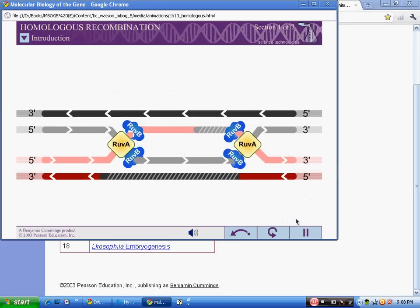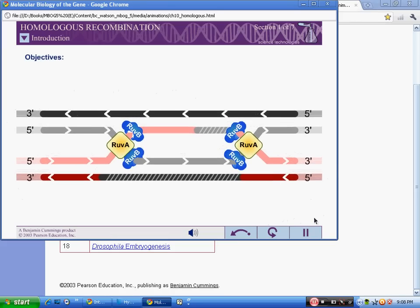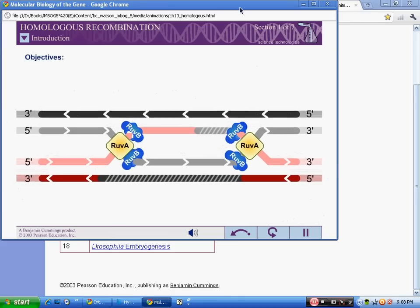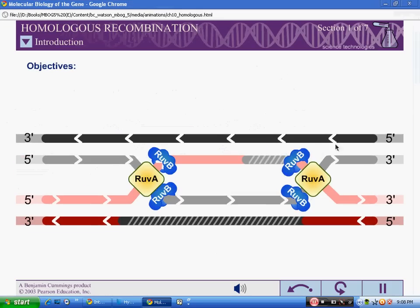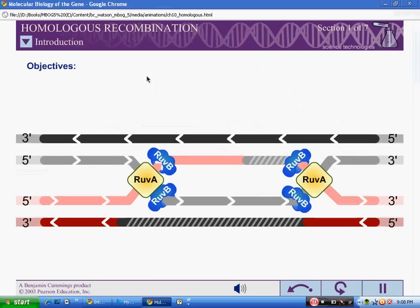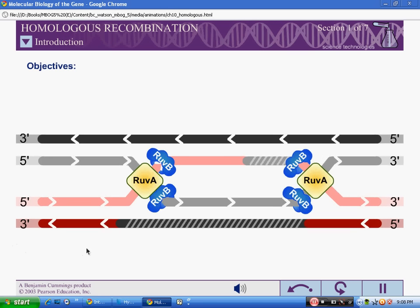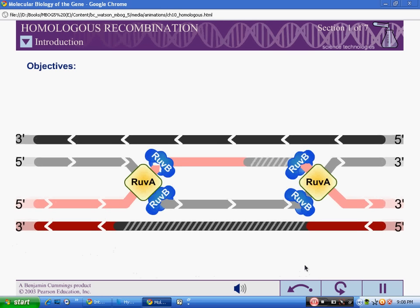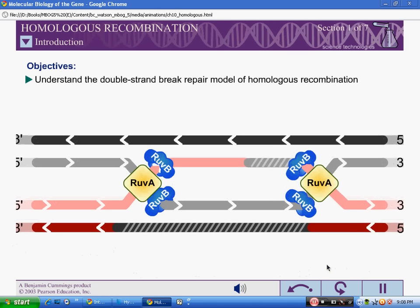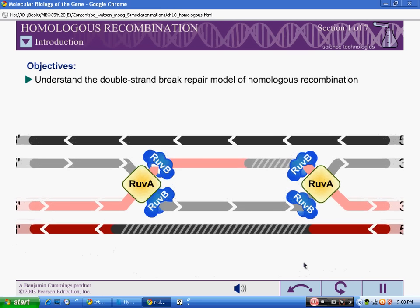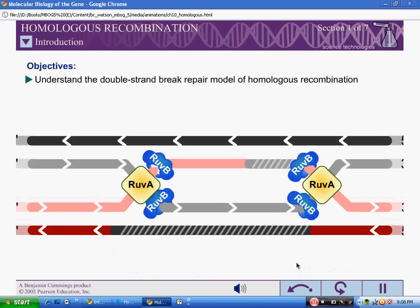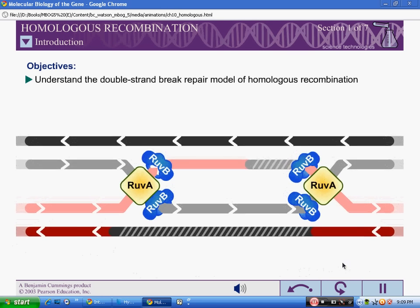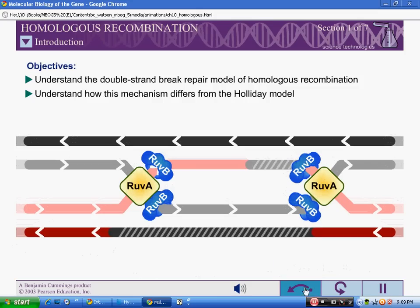When you have completed this exercise, you should understand the double strand break repair model of homologous recombination, understand how this mechanism differs from the Holliday model, and understand the cellular functions of homologous recombination.